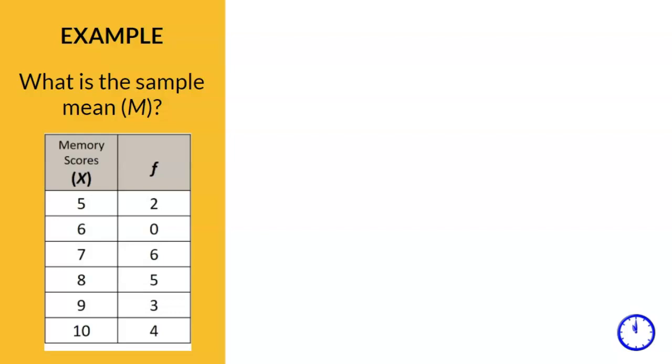Scores range from 0, poor memory, to 10, excellent memory. The frequency table here describes the data. What does the sample mean? I want you to pause the video here and attempt the problem on your own before I review the answer.